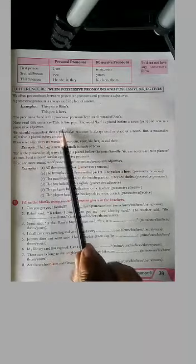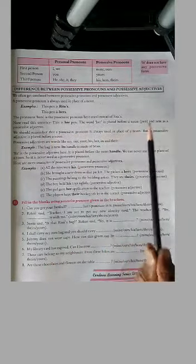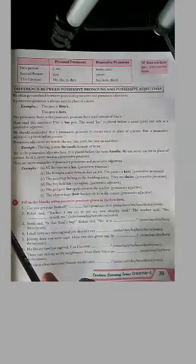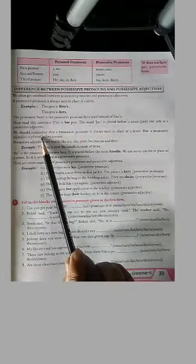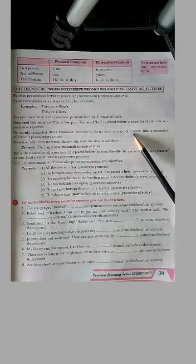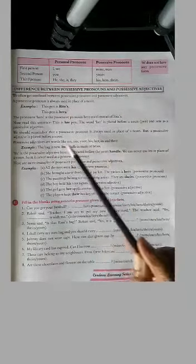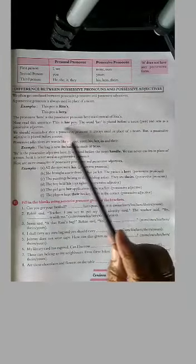Now read this sentence. This is her pen. The word her is placed before a noun pen and acts as a possessive adjective. We have to remember that a possessive pronoun is always used in place of a noun, but a possessive adjective is used before a noun.